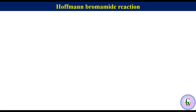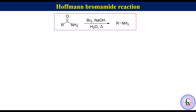In this reaction, a primary amide reacts with bromine and sodium hydroxide in water to produce a primary amine which has one carbon less than the starting amide. To draw the product of the Hofmann bromamide reaction, just replace the amide group with NH₂.